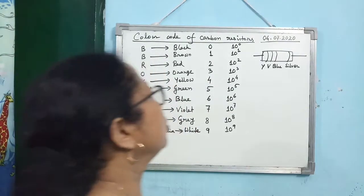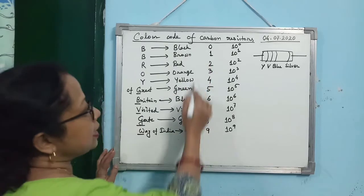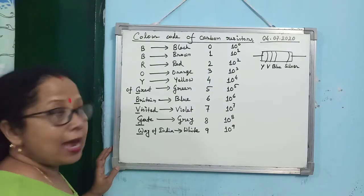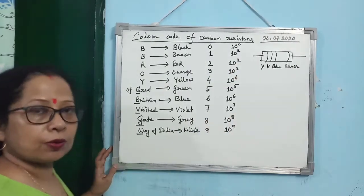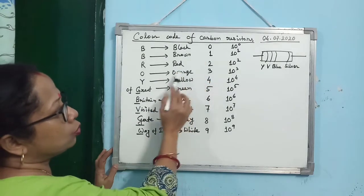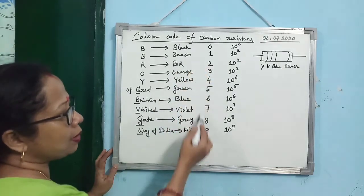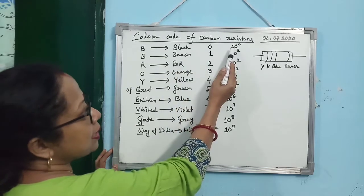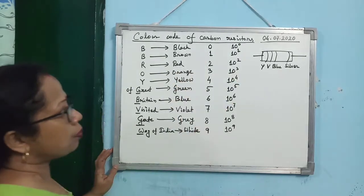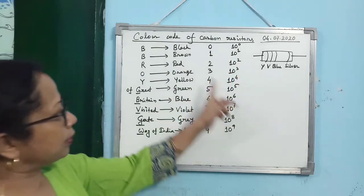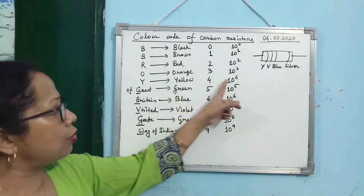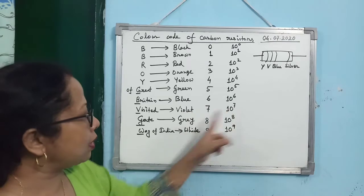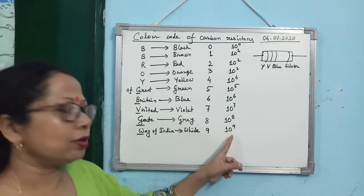The corresponding significant figures are: black = 0, brown = 1, red = 2, orange = 3, yellow = 4, green = 5, blue = 6, violet = 7, gray = 8, white = 9 — in sequence 0 to 9. The power of 10 follows the same order: black = 10⁰, brown = 10¹, red = 10², orange = 10³, yellow = 10⁴, green = 10⁵, blue = 10⁶, violet = 10⁷, gray = 10⁸, white = 10⁹.